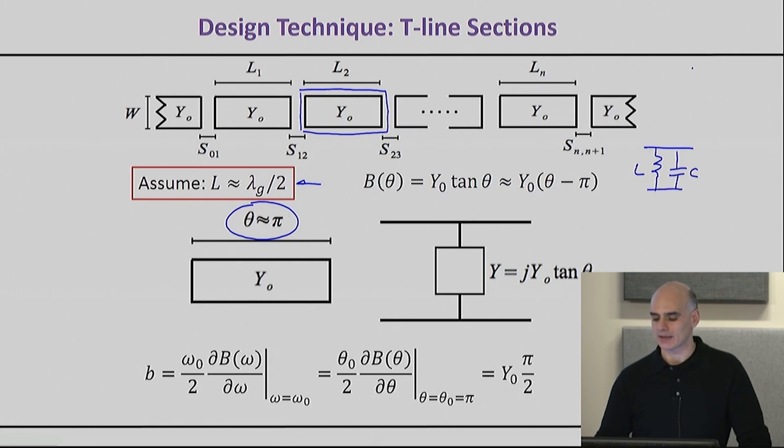If you take the equations we've derived for this open resonator and calculate the b, the susceptance of this resonator is nothing else but Y₀ tan θ. Just around resonance, you can approximate this with a linear equation which is simply Y₀ times (θ minus π). That means now you can compute this b. You differentiate the susceptance with regards to frequency, and that little b is nothing else but Y₀ π/2.